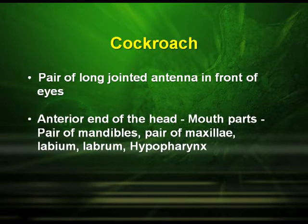The anterior end of the head has mouth parts like a pair of mandibles, pair of maxilla, labium, labrum and hypopharynx. The thorax is made up of three segments: the prothorax, the mesothorax and the metathorax.